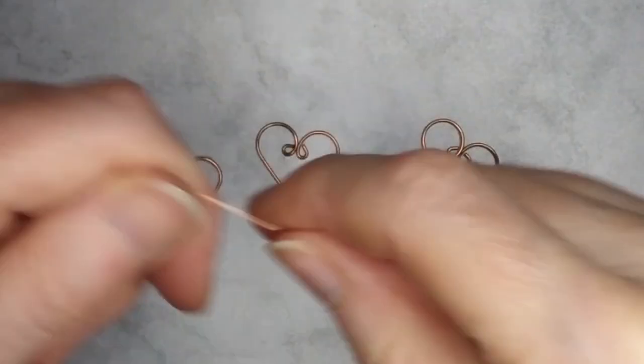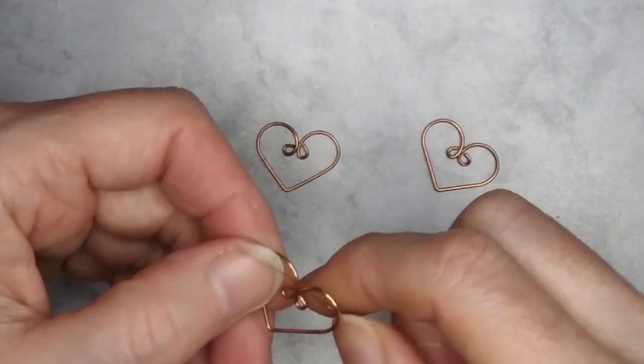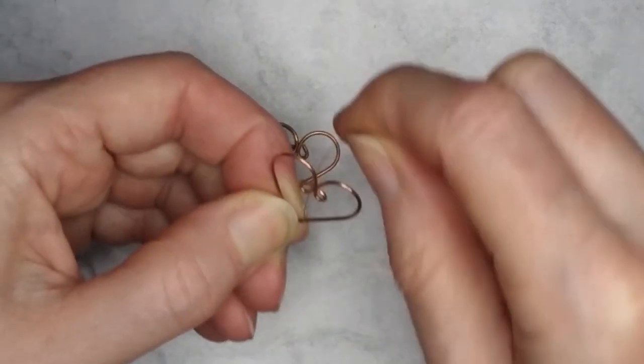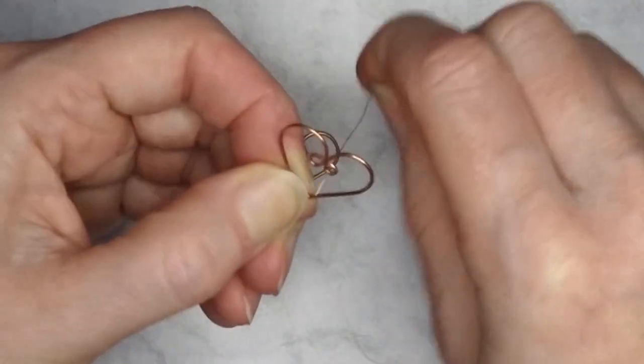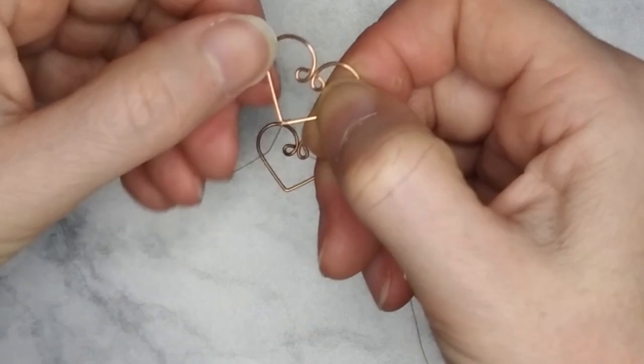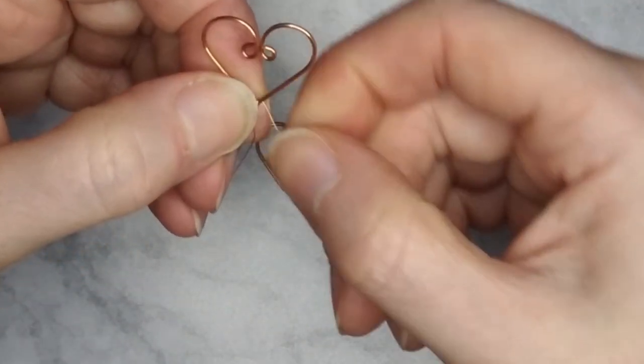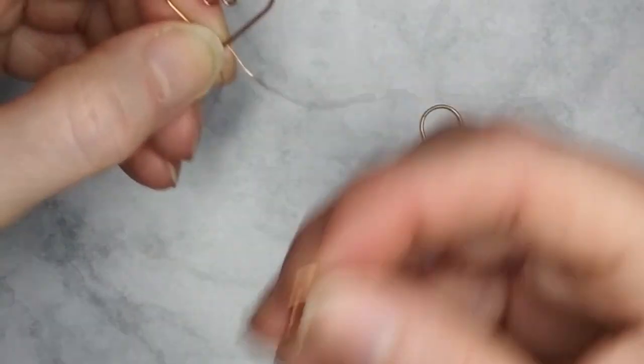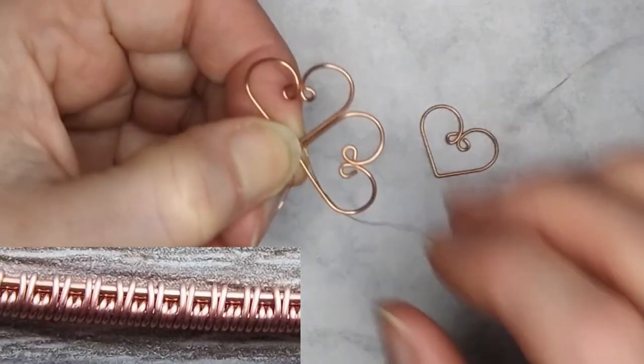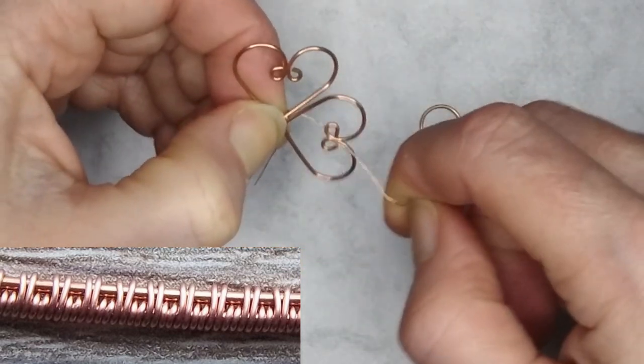For the sun catcher start with 3 heart shapes. I am weaving them together with 0.2mm wire. Start by wrapping to the right of the point of the first heart. Wrap the weaving wire around 3 times. Hold the second heart in position with the straight sides together. Wrap the weaving wire twice around both wires.